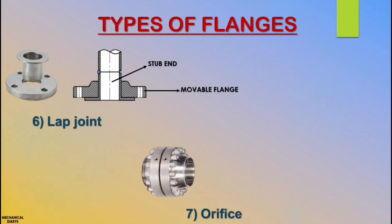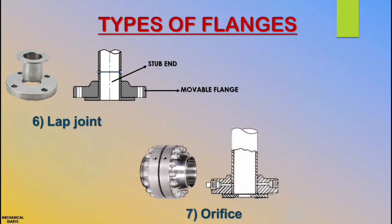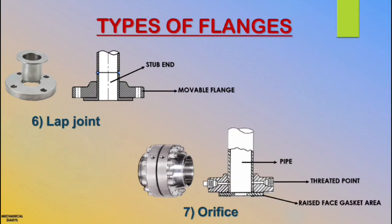Finally, we reach the last flange — orifice flange. First, what is orifice flange and what is the purpose of this type of flange? Orifice flange is used to measure the flow of products inside the pipe. The parts of orifice flange are a threaded point to fix the transmitter probe, then raised face flange, and pipe.